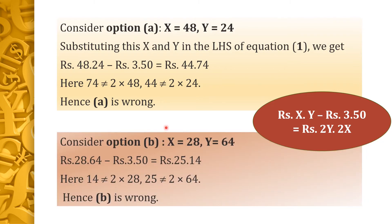Considering option B, 28 rupees and 64 paisae: substituting this x and y in the LHS of equation 1, we get 28 rupees and 64 paisae minus 3 rupees and 50 paisae equals 25 rupees and 14 paisae. Here, 14 is not equal to 2 into 28, and 25 is not equal to 2 into 64. Hence option B is wrong.